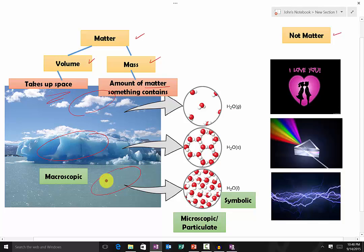When we look at something, there are three different views that we look at. The first one is the macroscopic view. Second, we have the microscopic view or the particulate view. And lastly, we have the symbolic view.